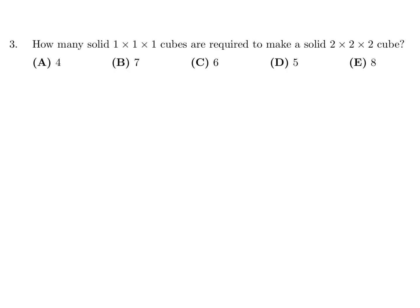How many 1 by 1 by 1 cubes are required to make a solid 2 by 2 by 2 cube? A 2 by 2 by 2 cube has a volume of 8. Now 1 by 1 by 1 has a volume of 1, so how many 1's can we put into 8? Obviously the answer is 8. So number 3, the answer is E.